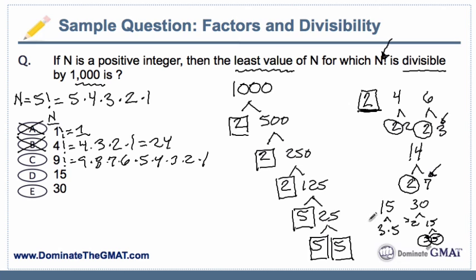Back to the drawing board — you can rejoin here if you fast-forwarded. Using some simple examples and this 'wouldn't it be nice if' strategy, we break it down into something we understand. Whatever multiple we're talking about must have at least the same building blocks as the factor in question. Back to our question: the factor is 1,000. We're trying to find a multiple of 1,000, and we know whatever that is, it must have at least the same basic building blocks — three 2s and three 5s.